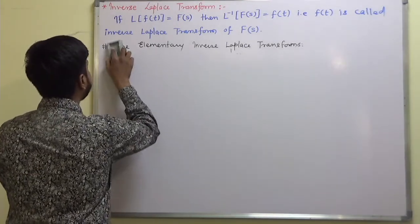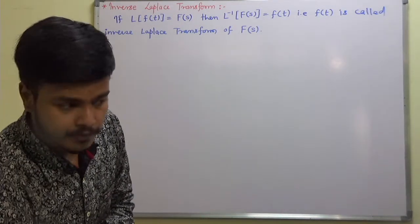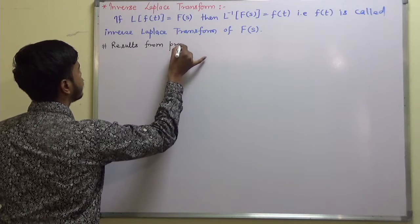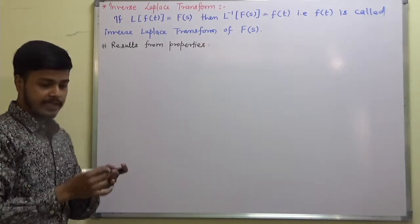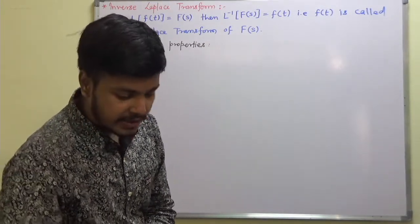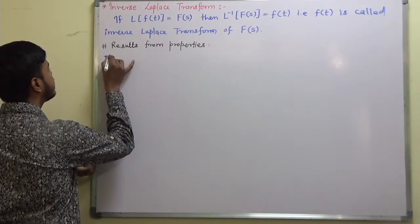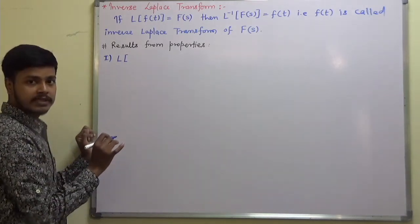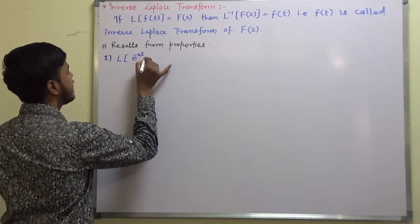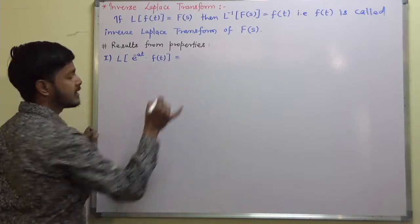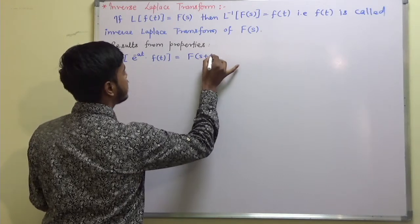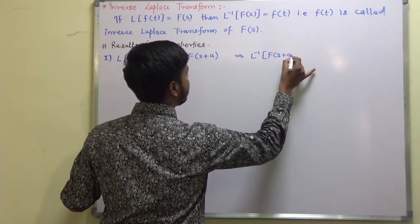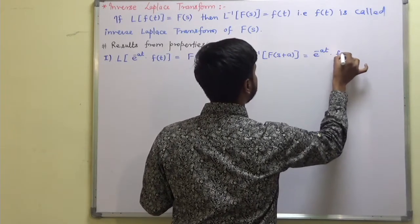Results from properties: the first is the shifting property. You know that the Laplace transform of e^(−at)·f(t) is F(s+a). So we can write: L inverse of F(s+a) is equal to e^(−at)·f(t).